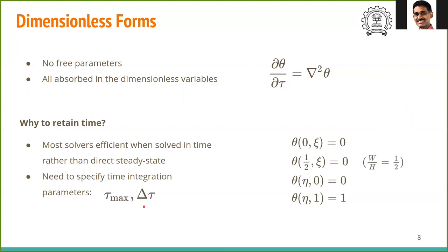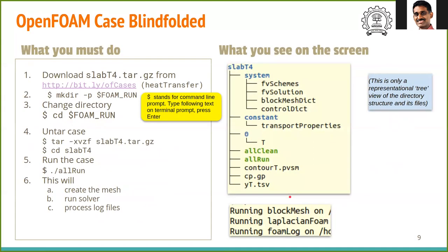We are able to estimate this quantity without reference to the actual physical time it will take for a particular material. Similarly, we can set the time step Δτ to be at least one order of magnitude smaller than the τ_max. All this can be done in a generic way without reference to a particular material. With that background, we are now ready to run OpenFOAM.